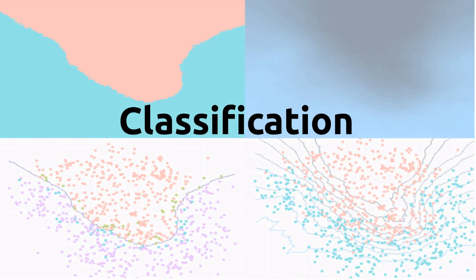Here we go. So today we're going to talk about classification, which is one of the main categories of machine learning.